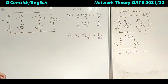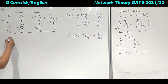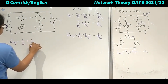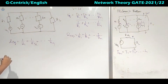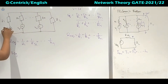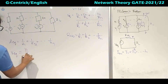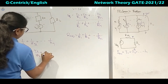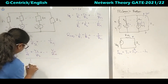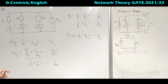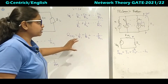Extending to impedances: Z_eq = 1/(1/Z1 + 1/Z2 + ... + 1/Zn), and V_eq = (V1/Z1 + V2/Z2 + ... + Vn/Zn) divided by the sum of admittances. This can also be reduced to a Thevenin equivalent circuit. This is Millman's theorem.